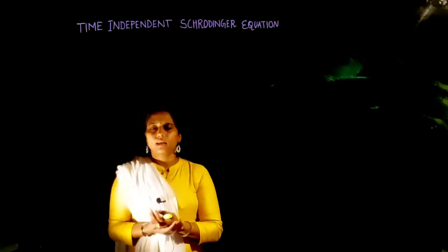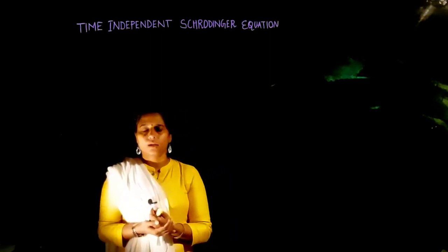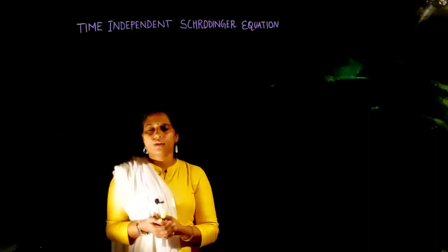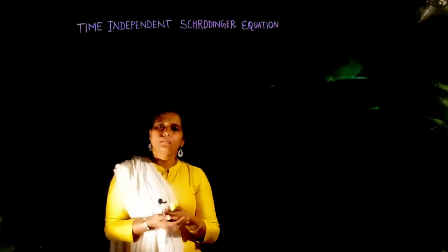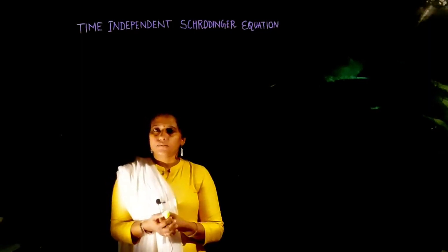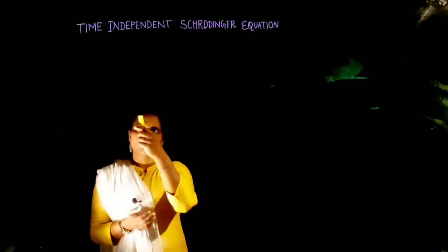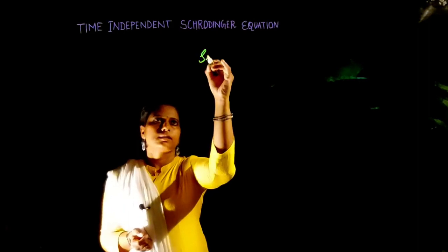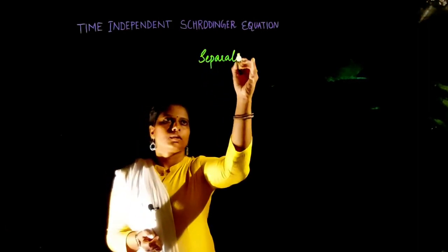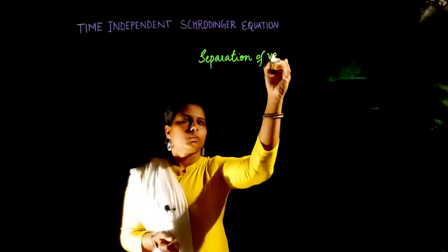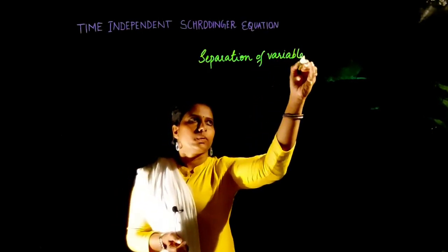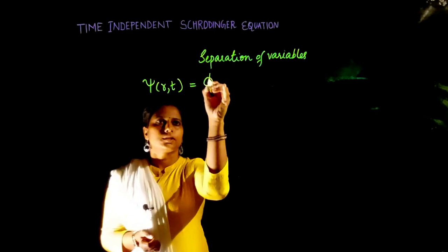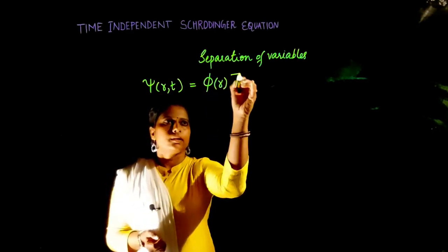In many situations when the Hamiltonian operator does not depend on time, the wave function psi of rt can be separated into two different functions — one depending on position alone and one depending on time alone. This is the method of separation of variables, which will be used to derive the time-independent Schrödinger equation. We write the wave function psi of rt as the product of two functions: phi of r and T of t.